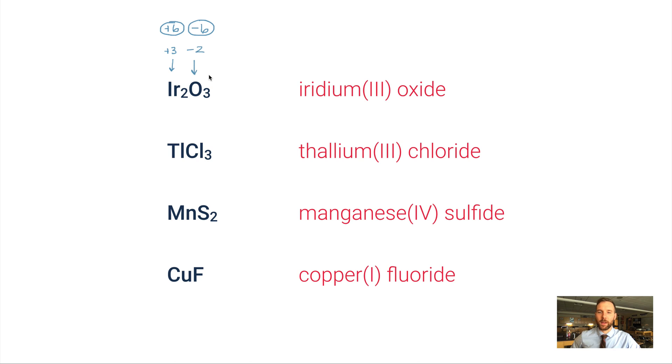One thing a lot of students mess up: they think this Roman numeral at the end of the metal name is how many metal atoms. For example, iridium(III)—they think this is iridium-3. That's not the case. Don't fall into that trap. This Roman numeral is the charge of the metal that it follows.